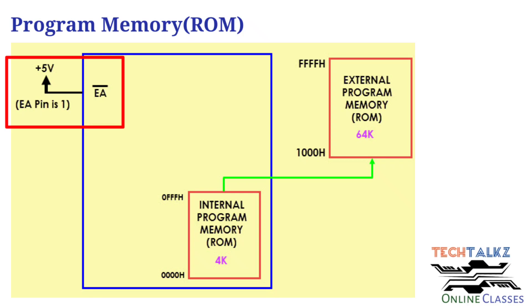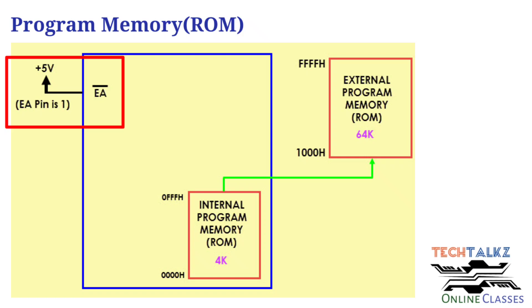The external access pin, that is the EA pin, is connected with high — that is VCC. The CPU first fetches instructions from the internal program memory, that is address range from 0000 to 0FFF hex. If the memory address is exceeded, it will automatically direct the CPU to the external ROM. So if this pin is high, first preference is given to the internal ROM. If the internal ROM size is exceeded, the CPU will automatically go to the external memory program.